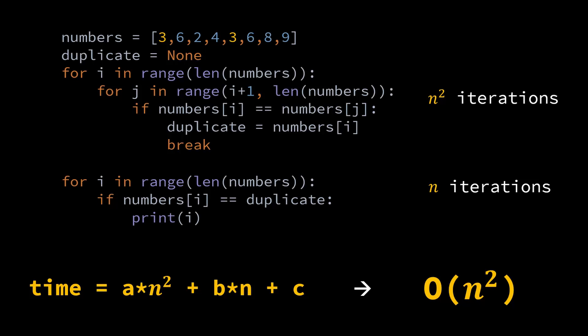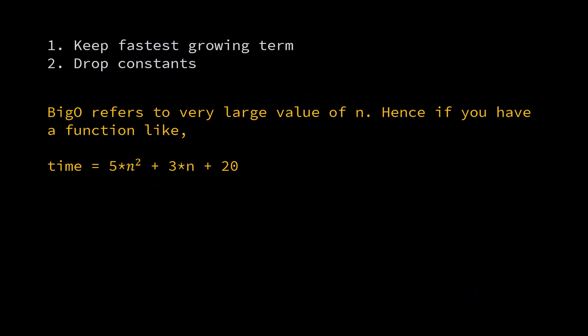Why do you keep only the fastest growing term? So let's understand the reasoning behind these two rules. Let's say you have a function which is something like this: 5n² + 3n + 20.